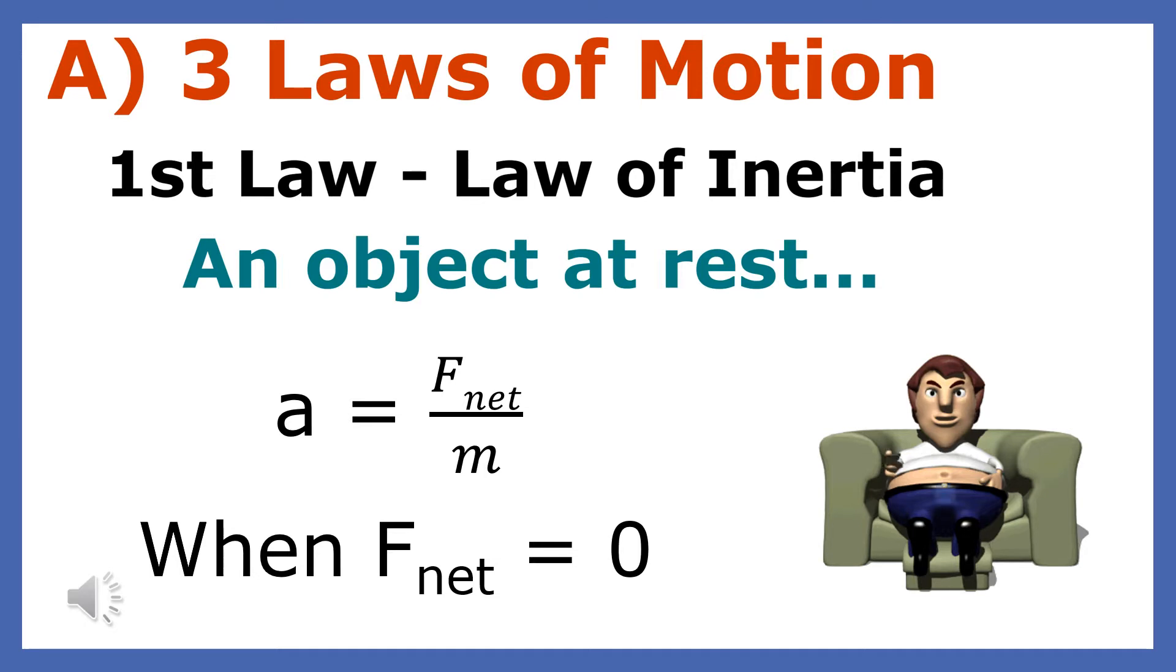There are two forces on this man right now who's sitting in the chair. There is the downward force of gravity and the upward force of the chair. These forces are equal but opposite, so the net force on him is zero.